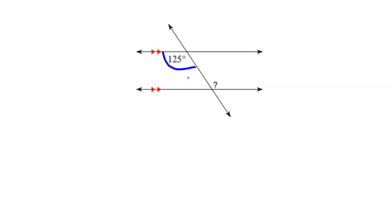You'll notice here I have an angle that measures 125 degrees. And then over here, this question mark angle is located alternate interior to the given angle. Alternate interior angles are congruent. So if this angle measures 125, the question mark angle is also going to measure 125 degrees.